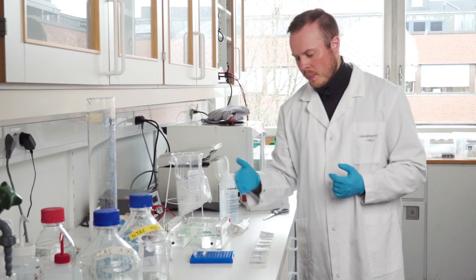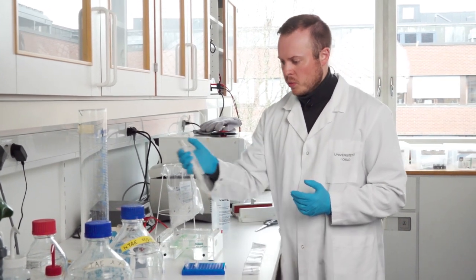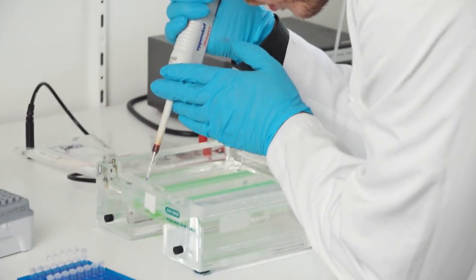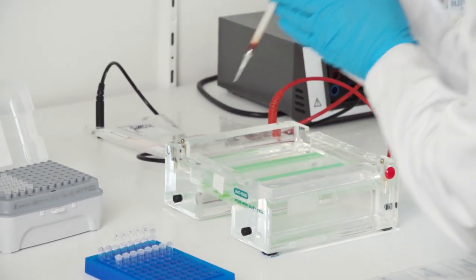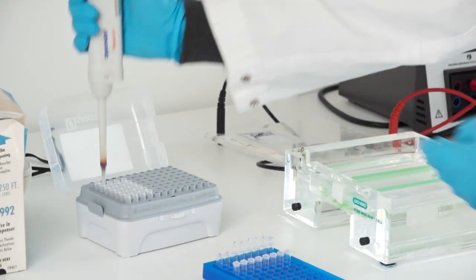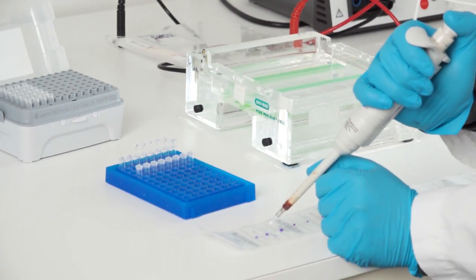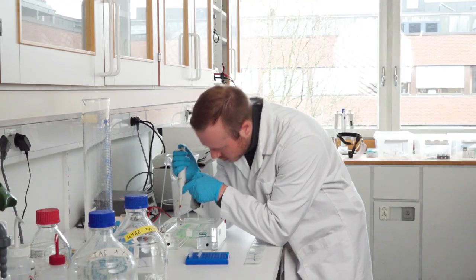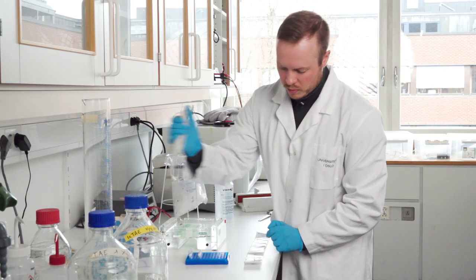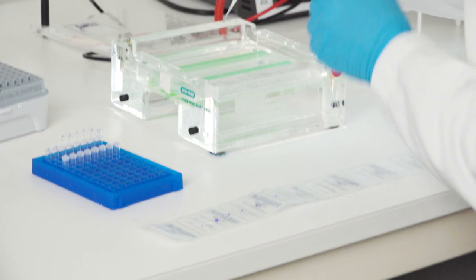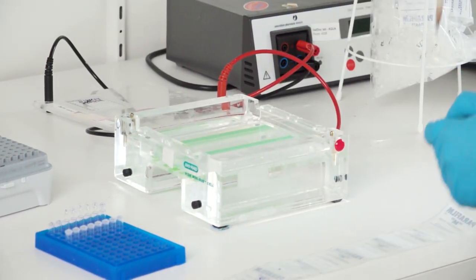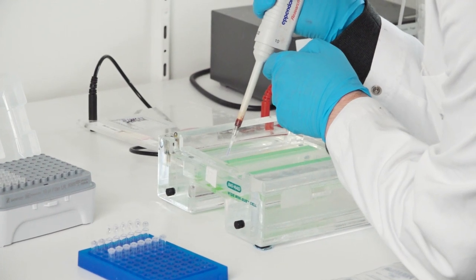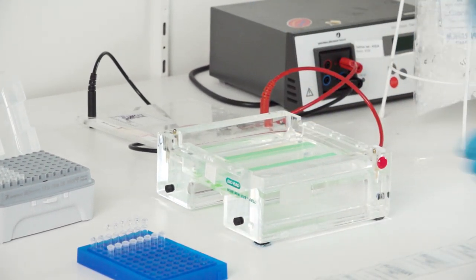So the next thing is loading the samples into the gel. And here I prefer to take in the ladder first. So I suck it up, find the well I want, place it in, change tip. Then the first sample we had was the positive control. So I take the positive control first and place it inside. Then I take the negative control second, place it in the well, change tip. Then one of the real samples, place it in. And then you fill all the wells you need.